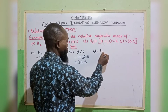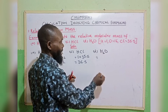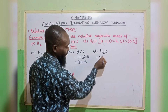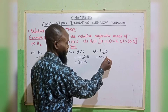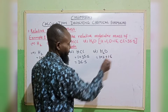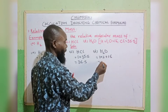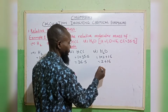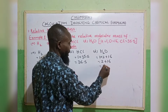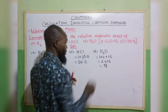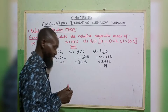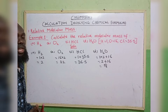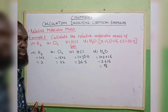D: H₂O. The atomic mass of hydrogen is 1 multiplied by 2, then plus 16 for oxygen. So 1 multiplied by 2 gives 2, plus 16 gives us 18. So this is how to calculate the relative molecular mass of this compound.